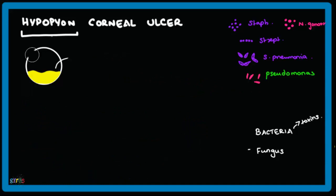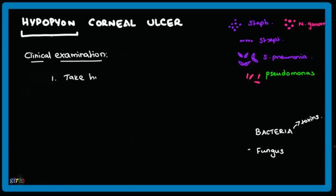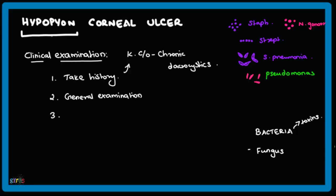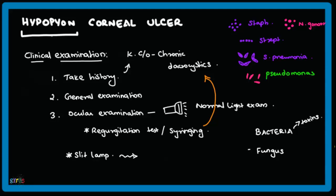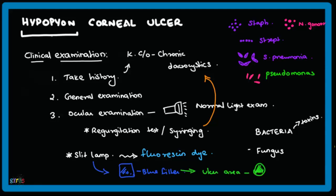Signs include swelling of the eyelids, chemosis of the conjunctiva, and hyperemic conjunctiva. The ulcer area can generally be seen over the cornea. Clinical examinations to be done include taking a history, checking whether the patient is a known case of chronic dacryocystitis, doing a general examination, and ocular examinations including normal light examination, regurgitation and syringing test, and slit lamp examination after applying fluorescent dye. Viewing through the blue filter, the ulcer area shows green opaque regions.